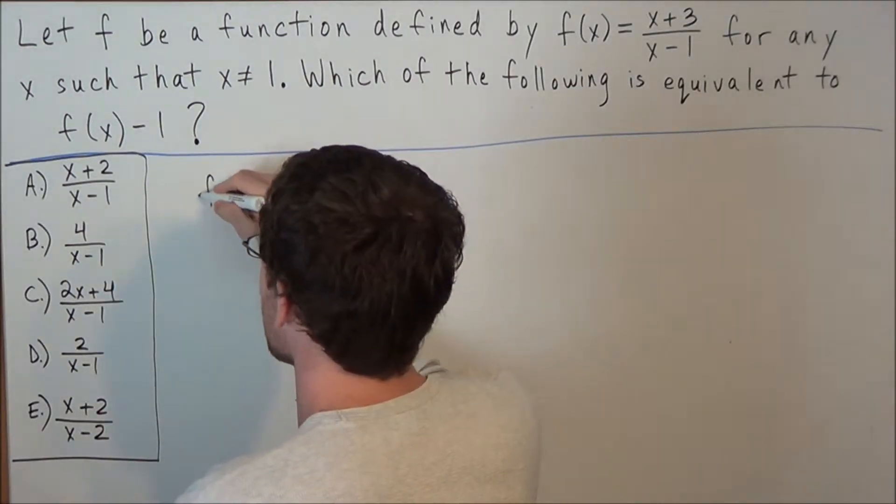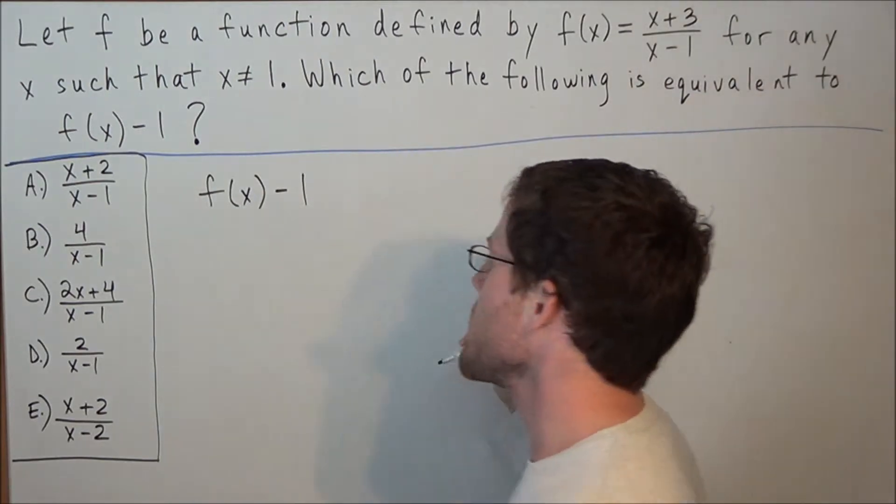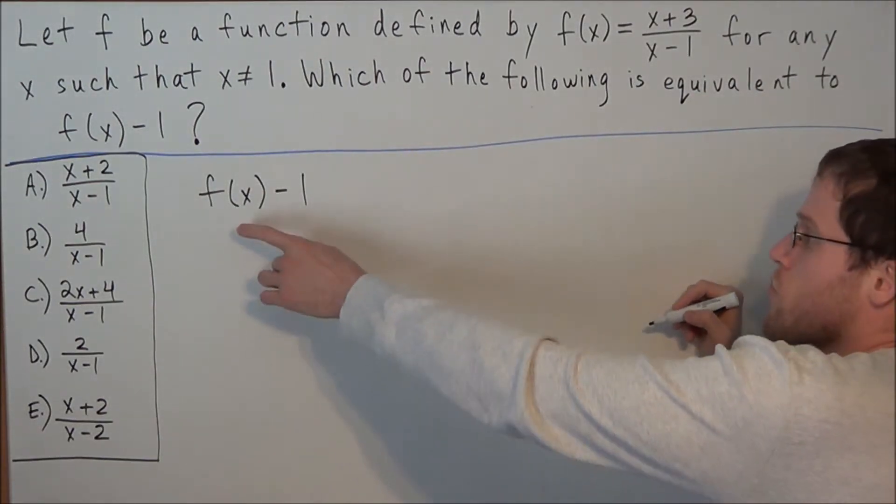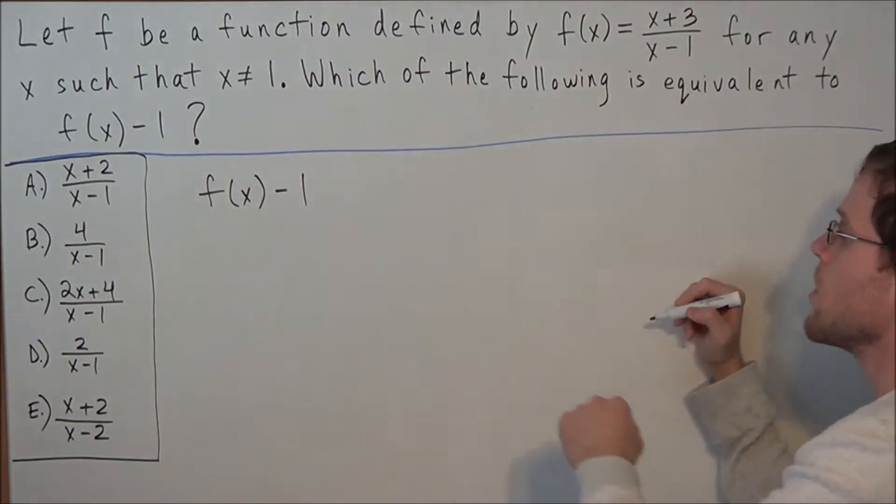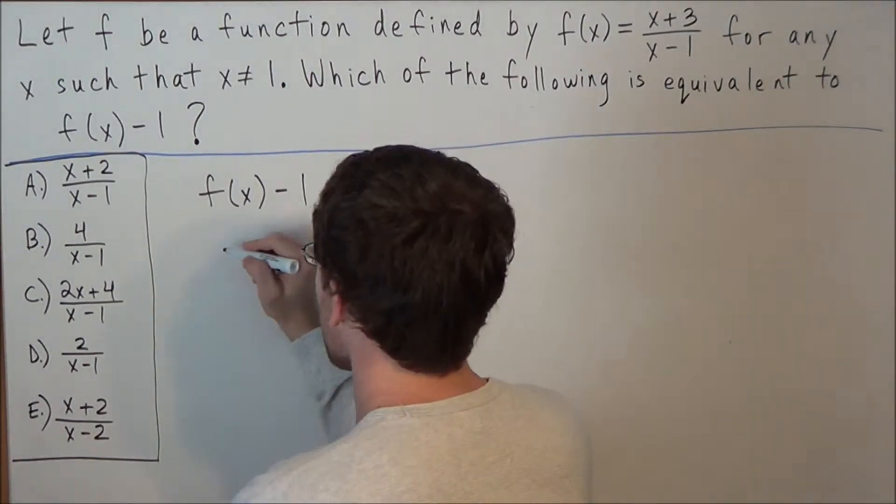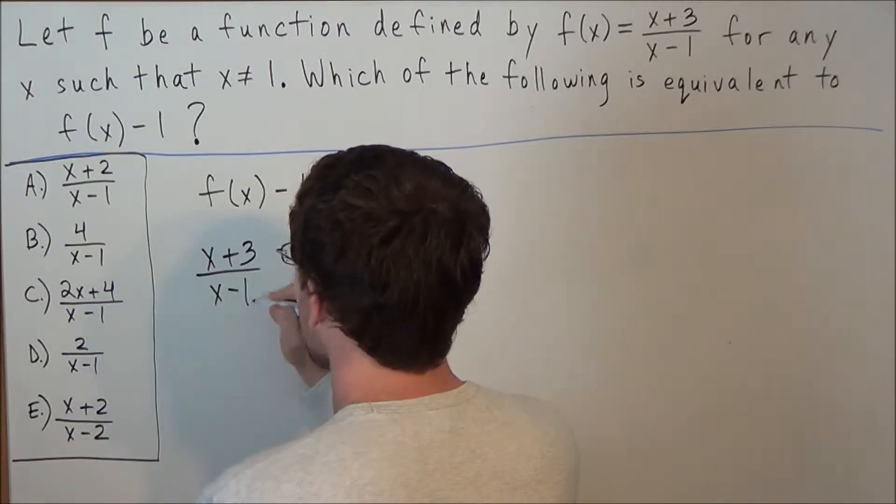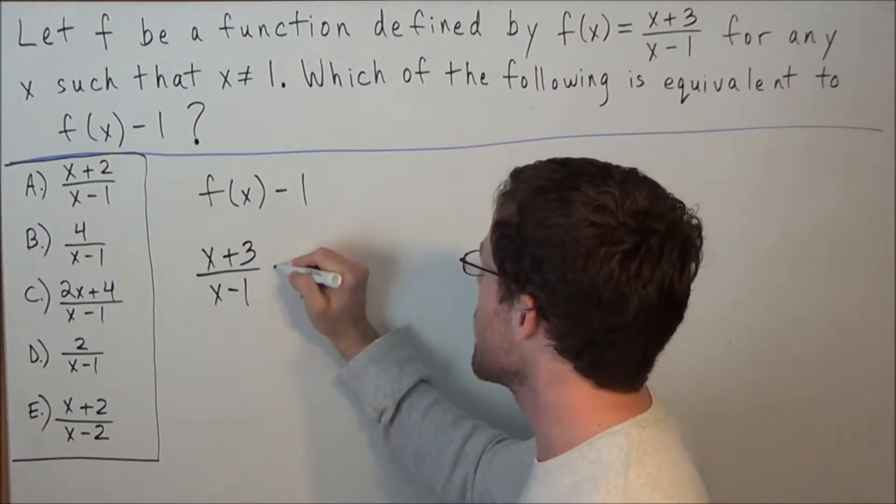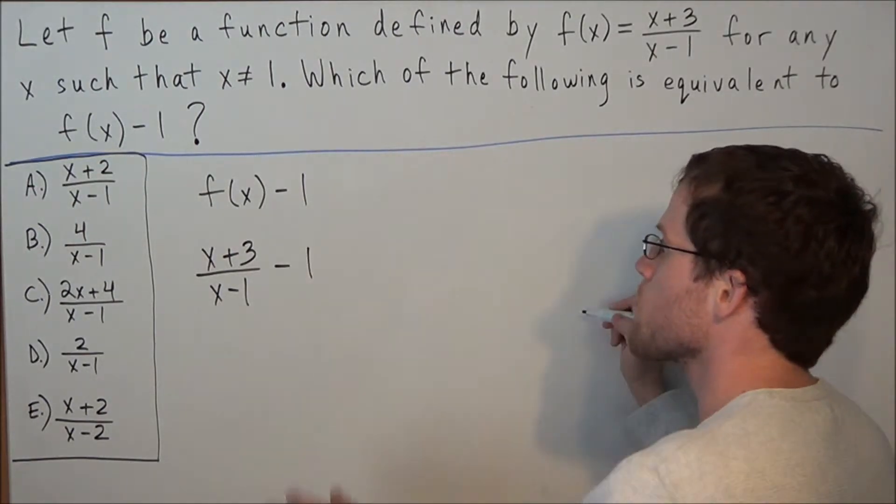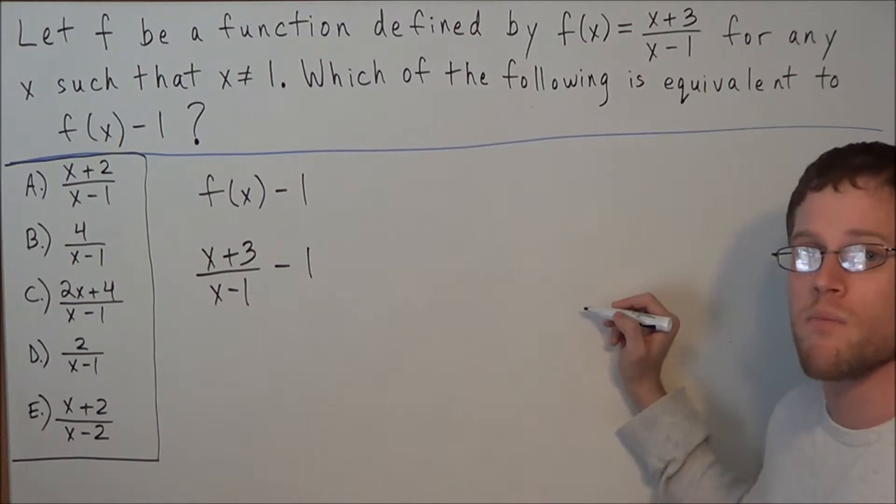Since we're trying to find f(x) minus 1, what we need to do is make a direct substitution for f(x). So instead of reading this as f(x) minus 1, for the next line we're going to write x plus 3 over x minus 1 minus 1. All we did was replace f(x) with x plus 3 over x minus 1.